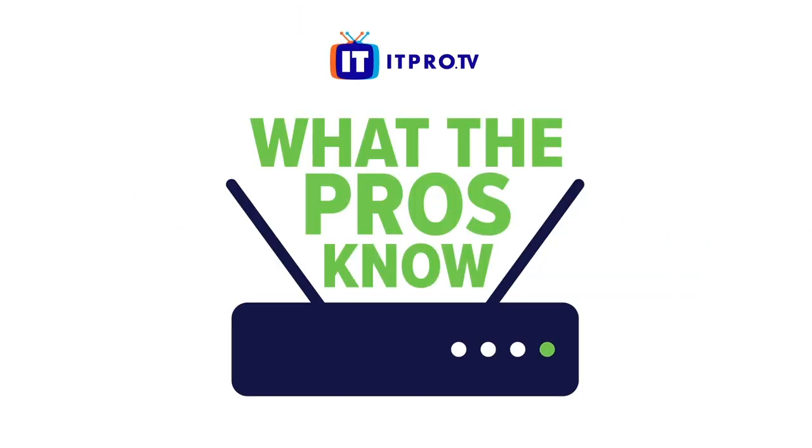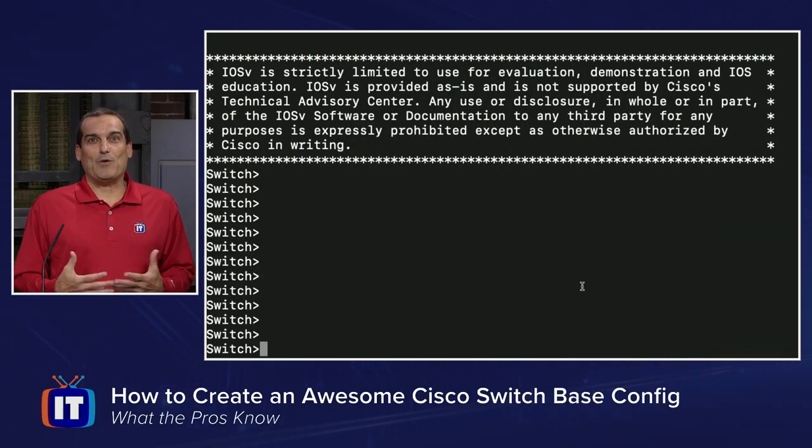When you're working with your Cisco switches, you know that you can start with a base configuration. This is something we're going to do when configuring a production Cisco switch, as well as when configuring a Cisco switch in our practice lab as we're gearing up for a certification exam. In this video, I'm going to share with you an awesome initial base configuration for your Cisco switch that we're going to build together. I'm Anthony Sequeira with ITProTV.